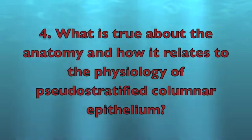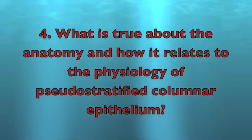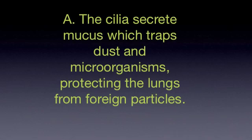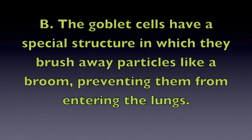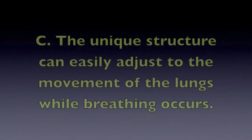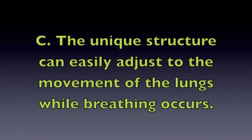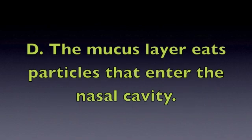Question 4. What is true about the anatomy, and how it relates to the physiology, of a pseudostratified columnar epithelium? A. The cilia secrete mucus, which traps dust microorganisms, protecting the lungs from foreign particles. B. The goblet cells, which have a special structure in which they brush away particles like a broom, preventing them from entering the lungs. C. The unique structure can easily adjust to the movement of the lungs while breathing occurs. Or D. The mucus layer eats particles that enter the nasal cavity.